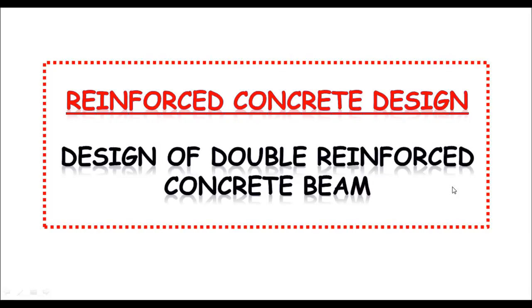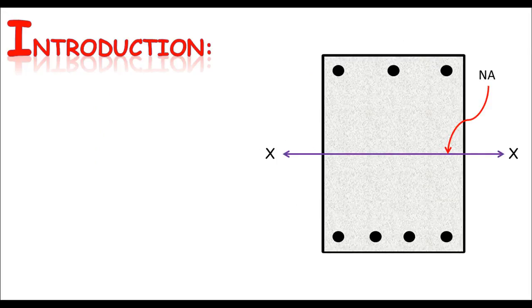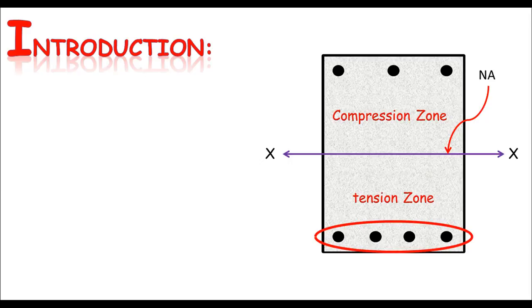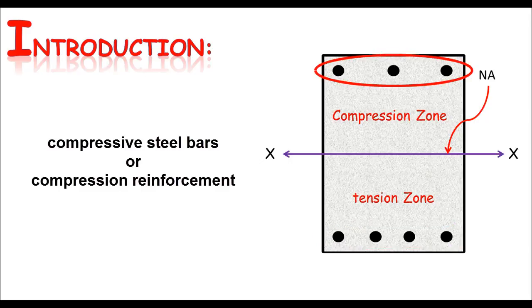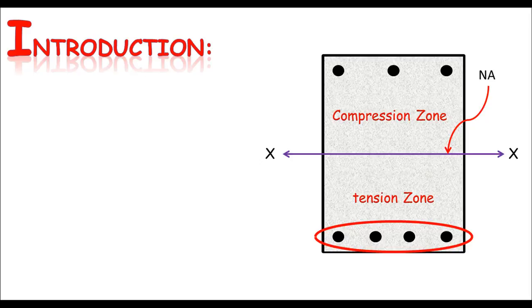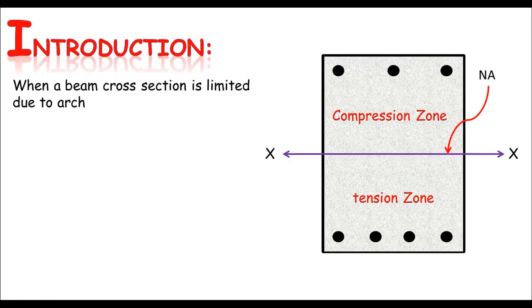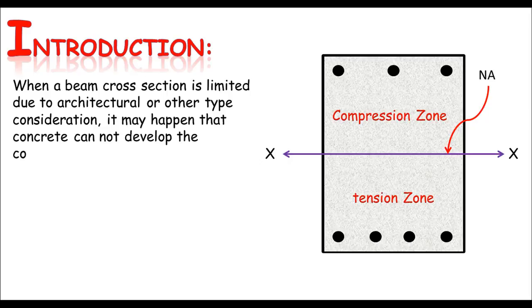Before starting the design of double RC beam, let me spend a little time on introduction. As we know, the neutral axis divides the beam section into two parts: the compression zone and the tension zone. The steel used in the tension zone is known as tensile steel, and the steel used in the compression zone is known as compressive steel. When steel is used only in the tension zone, the beam is known as a singly RC beam.